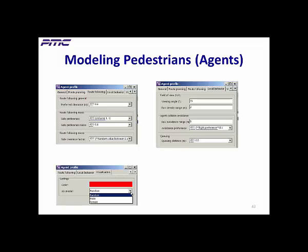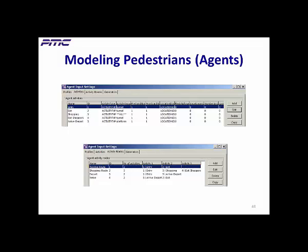You can also specify the color representing a given type of pedestrian. The routing of people is based on activity planning and scheduling — people are routed between an activity goal and a destination as specified in the agent input settings. Routes are based on the least-effort principle and are updated dynamically using actual density information, ensuring a realistic spread of flow over the environment.